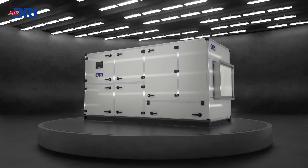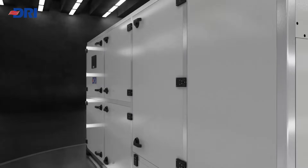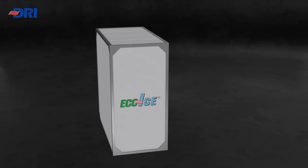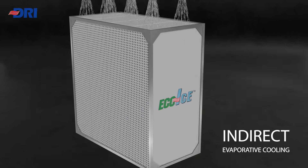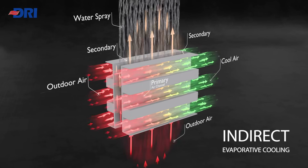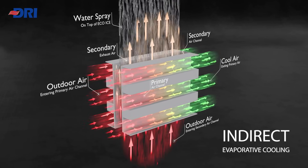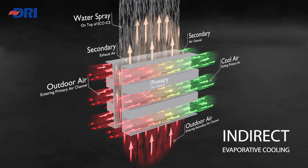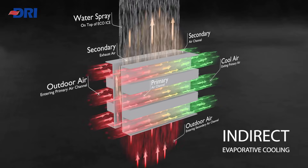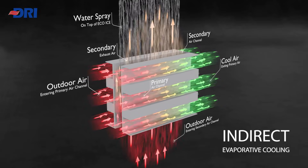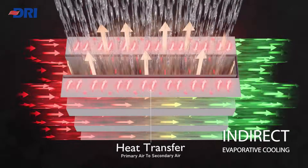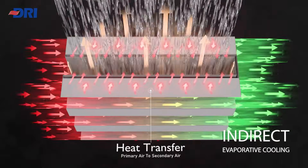Let's explore its innovative mechanism. The cooling process begins with indirect evaporative cooling. Warm, dry outside air is drawn into the IDEC unit. Inside the high-efficiency eco-ice core, this air is divided into primary and secondary streams. Both air streams run in separate dry and wet channels in the heat exchanger. The secondary stream is moistened and used to cool the dry stream of air through the heat exchanger, which facilitates the heat transfer from primary air to secondary air.